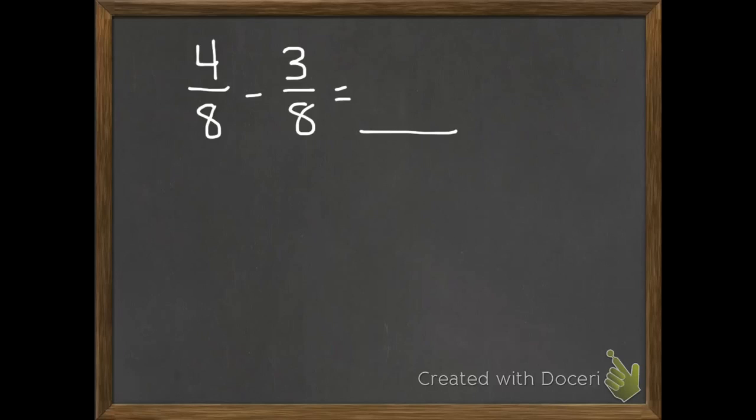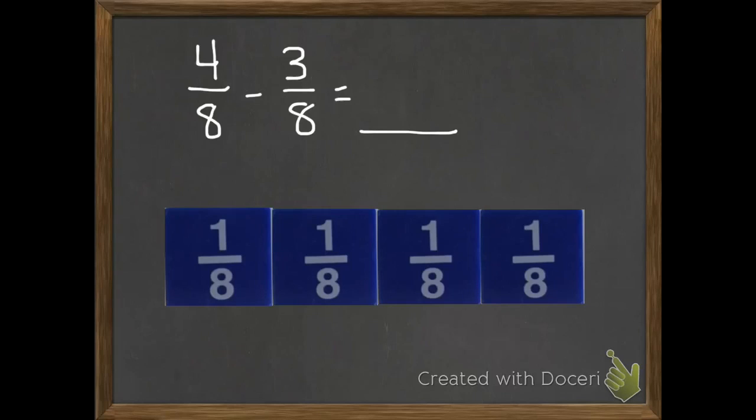So first of all, we're going to start with our 4 eighths. That's how much we have. So I'm going to make 4 eighths. And then how many do we need to get rid of? We need to subtract 3 of them.